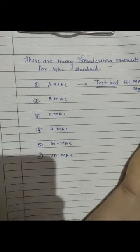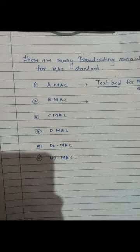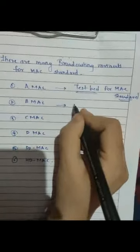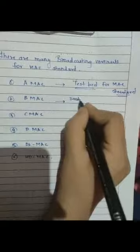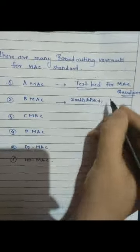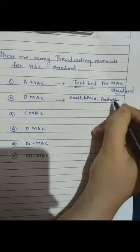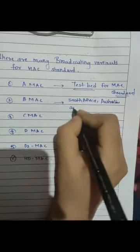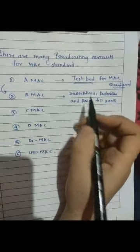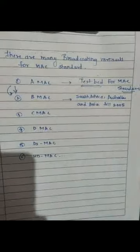The basic one is A-MAC. The second one is B-MAC. B-MAC was mostly used in South Africa, Australia, and Asia. B-MAC was the improvised version of A-MAC.